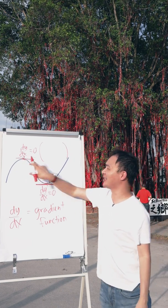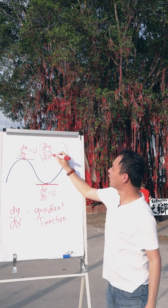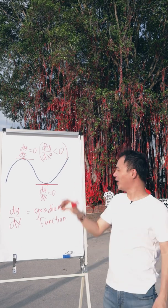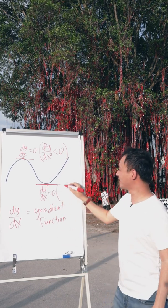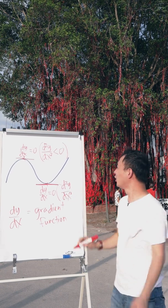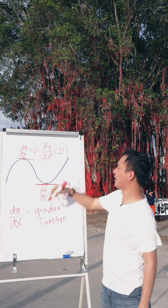So when this one is the maximum, when you do the second derivative which is d²y/dx², it will always be less than zero. So when this one is minimum, the second derivative, meaning when you differentiate a second time, you will get a positive value. This is how we differentiate whether it's maximum or minimum.